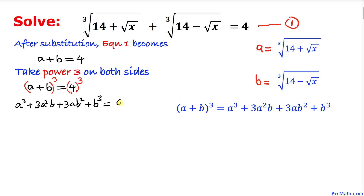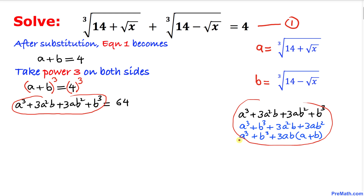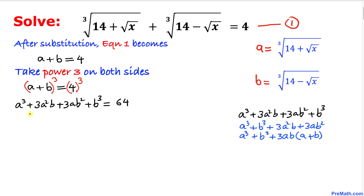Now let's focus on the left hand side. We can manipulate it and rewrite it as a³ plus b³ plus 3ab(a plus b). So the equation becomes: a³ plus b³ plus 3 times ab times (a plus b) equals 64.